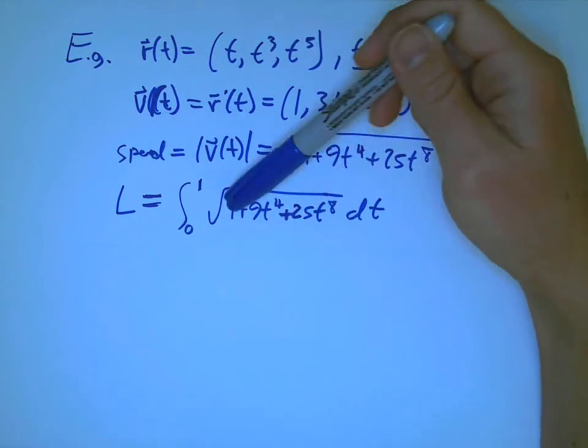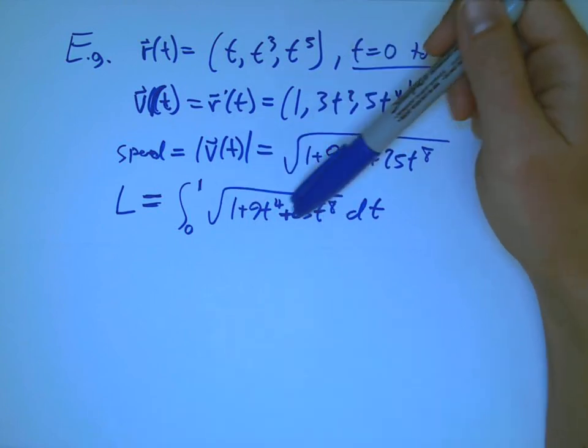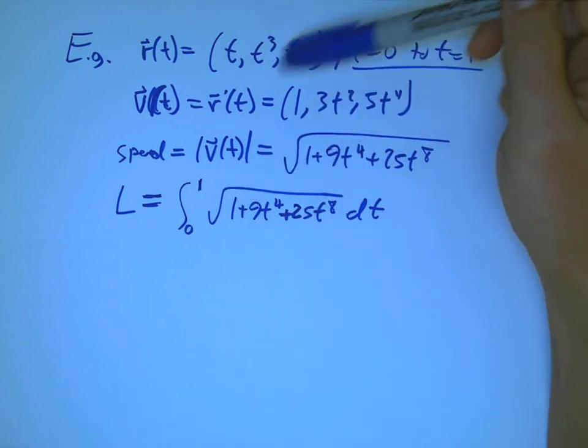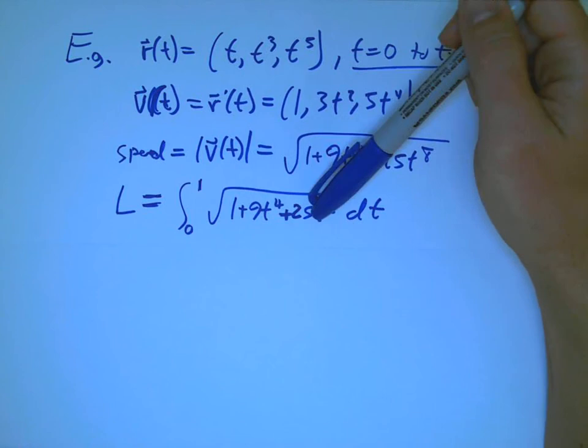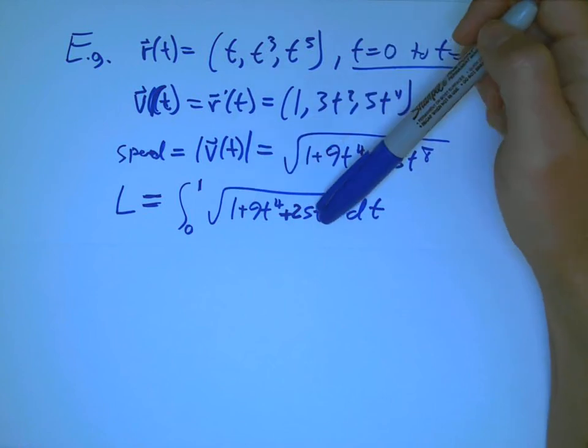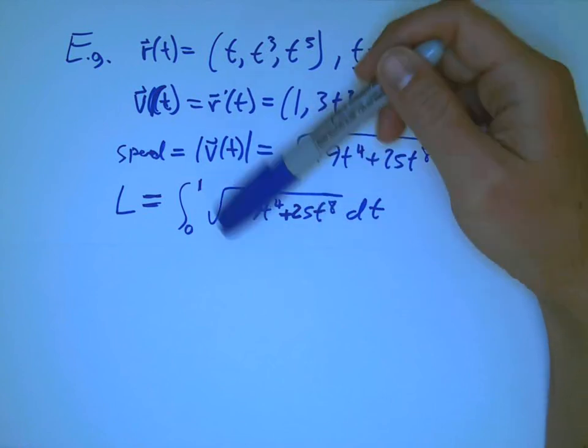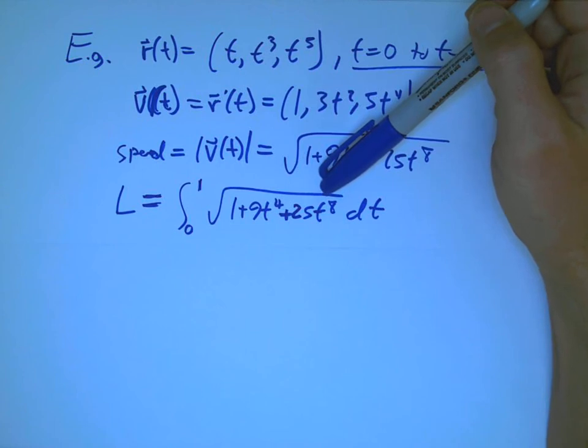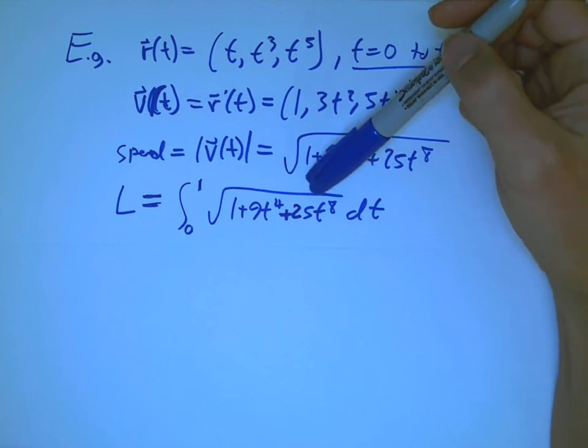They have coefficients that are carefully, carefully chosen so that this ends up being a perfect square. It's almost always rather tricky to recognize it, but sometimes you can make very special contrived examples so that this inside the square root ends up being a perfect square. And so that this actually can algebraically simplify.